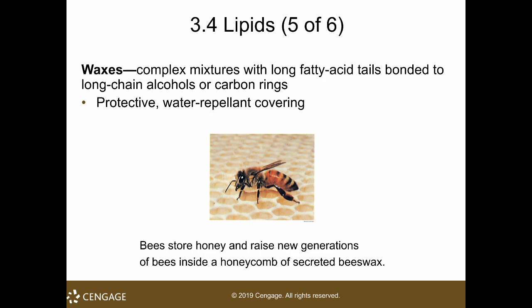Another class of lipids is waxes. Waxes are very complex mixtures with very long fatty acid chains. A typical fatty acid chain is 16 to 22 carbons, but for waxes it can number up to 40 carbons. They also have long chain alcohols, making them esters. Waxes form water-repellent coverings — for example, the waxy coverings found on plants.